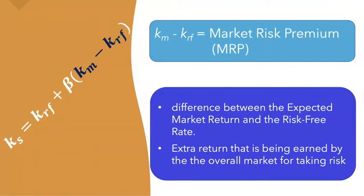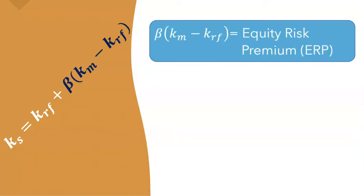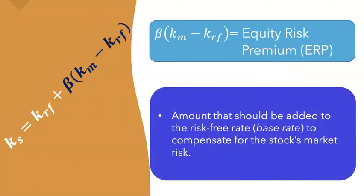KM minus KRF is the market risk premium — the difference between the expected market return and the risk-free rate. It's the extra return being earned in the overall market for taking risk, the amount above and beyond the risk-free rate. Beta times (KM minus KRF) is what we call the equity risk premium — the total amount we should add to the risk-free base rate to compensate for the stock's market risk.